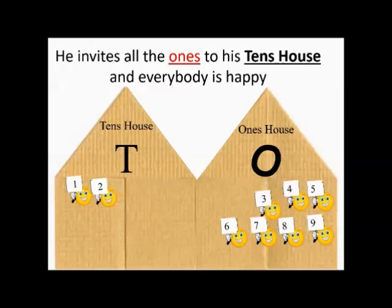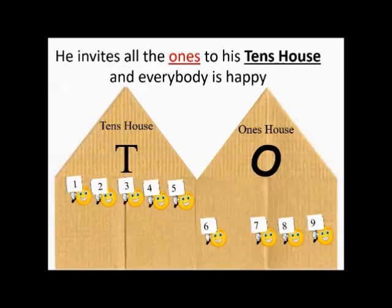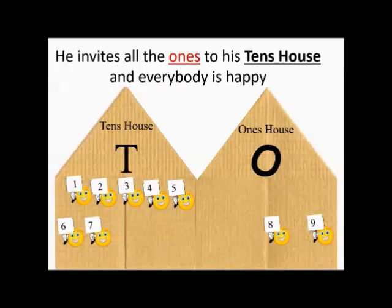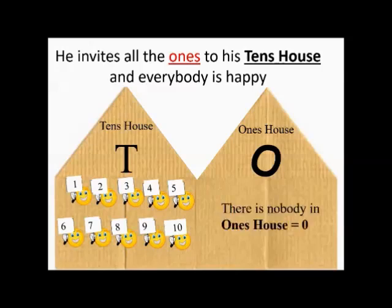1, 2, count it home — 3, 4, 5, 6, 7, 8, 9. Nine people have gone from the 1's house to the 10's house, and 1 person was already there. So, how many people in 10's house now? 10 people in 10's house.